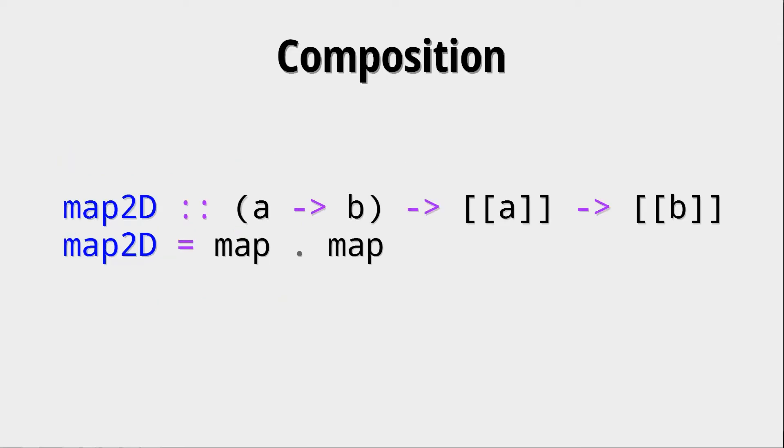A more practical example maybe would be a two-dimensional map. Now, it's very important to see that this function that we give it still is only a to b and not, for example, a list of a's to a list of b's. But this map2d now works on two-dimensional lists. By the way, doing this with multiple maps, so map dot map dot map for n times, would create an n-dimensional map. So doing this with three maps would create a map 3d, for example.